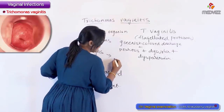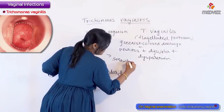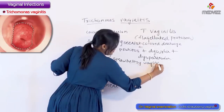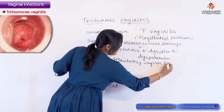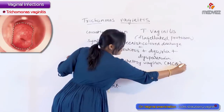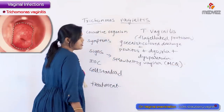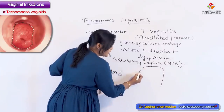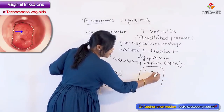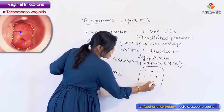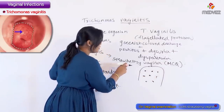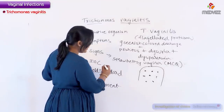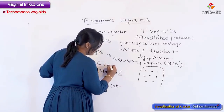Coming to the signs — signs are what you observe on examination. When you do a per speculum examination, the vagina looks like a strawberry vagina. The vagina, because of the infection, will be red colored, and on that you will see red-colored punctate dots, giving the appearance of a strawberry vagina. This has been asked as an MCQ.